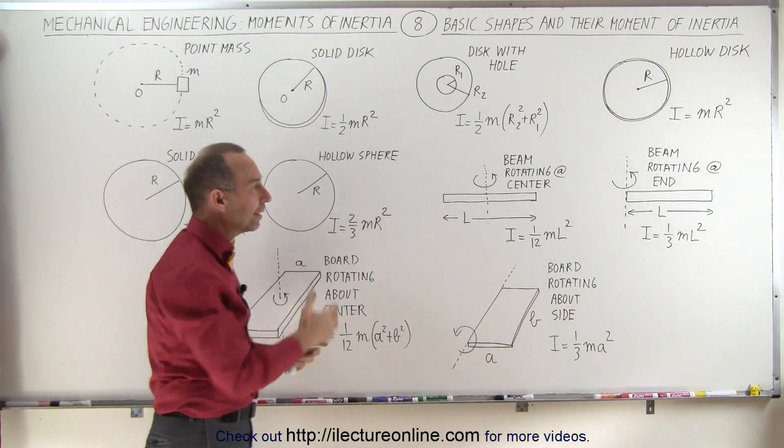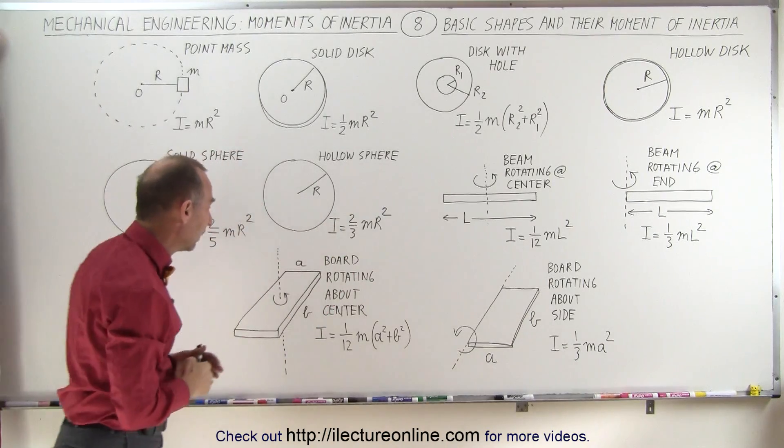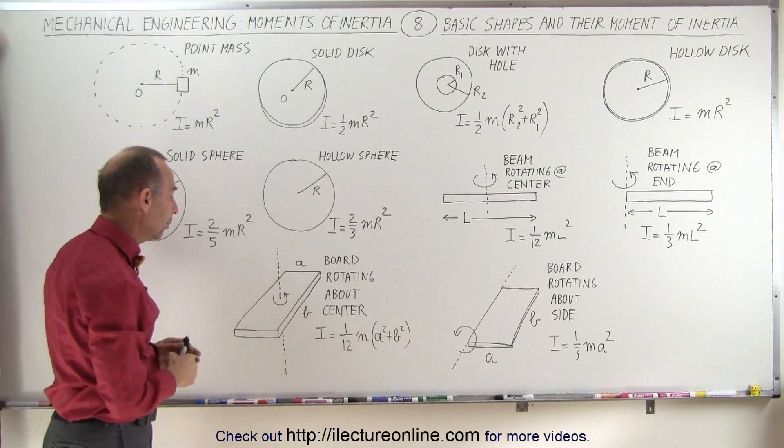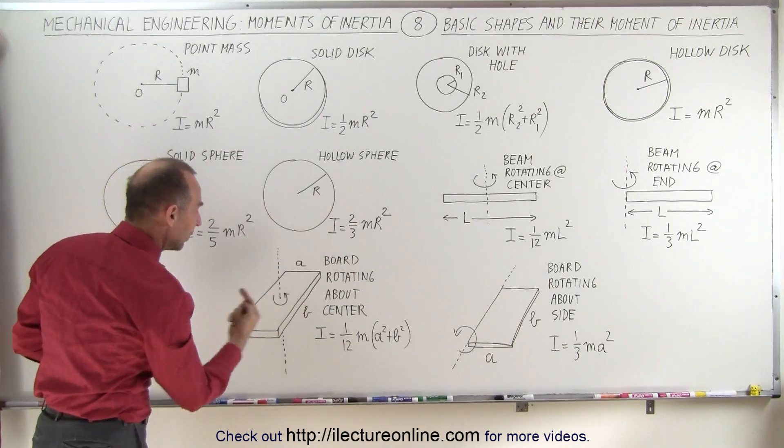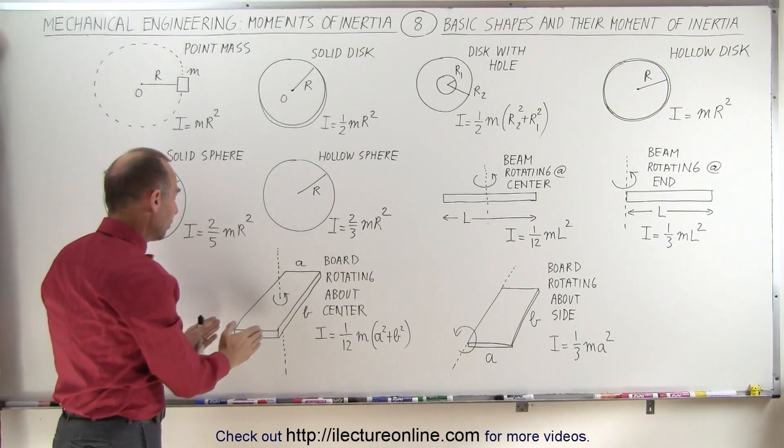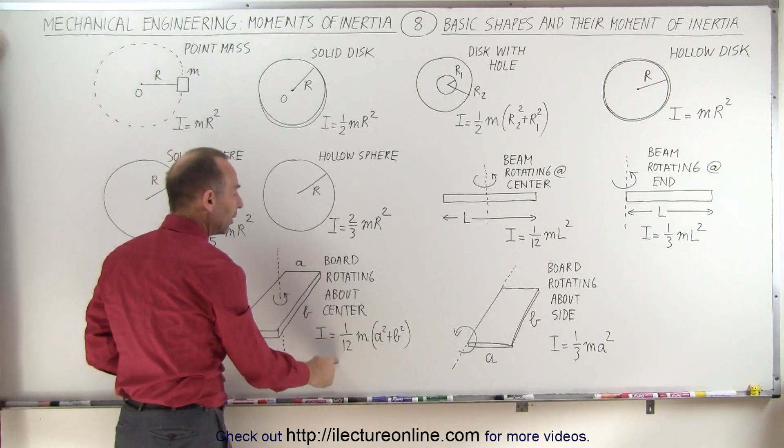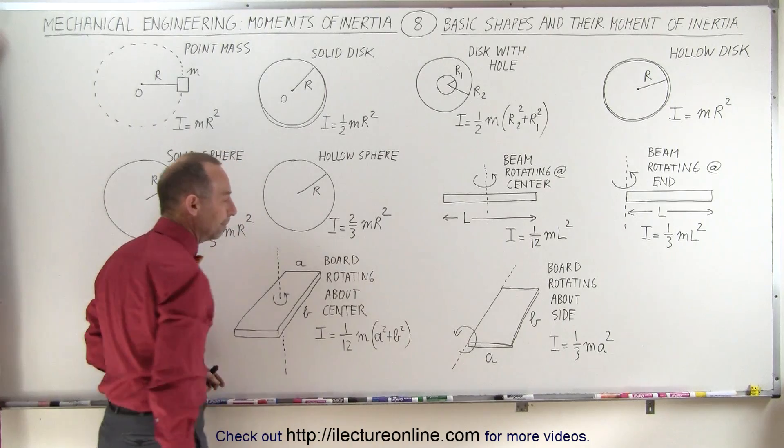Later we'll learn how to calculate all of these and convert from one to another. If we have a solid board rotating about its center in this direction, with width a and length b, the moment of inertia is 1/12 m times the sum of a squared plus b squared.